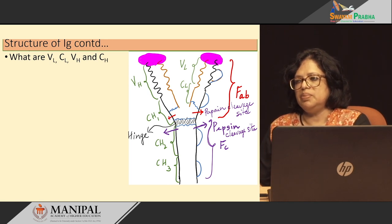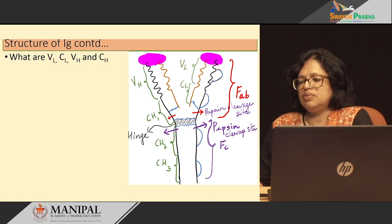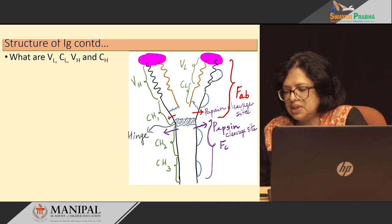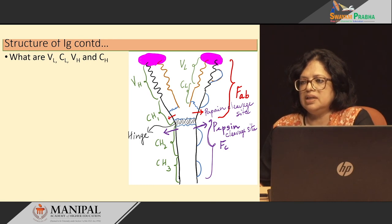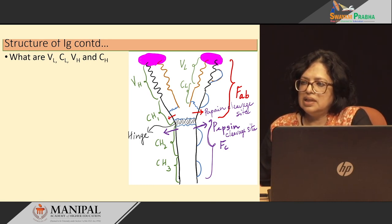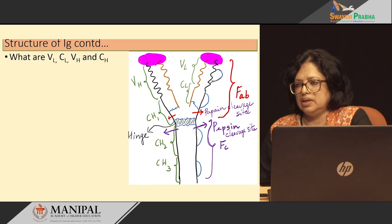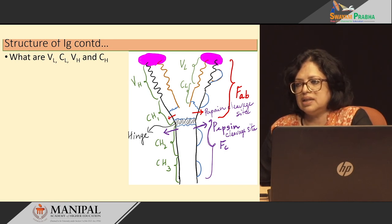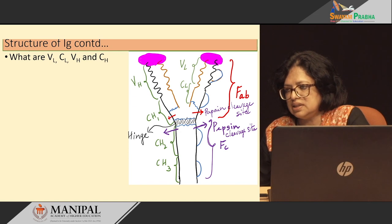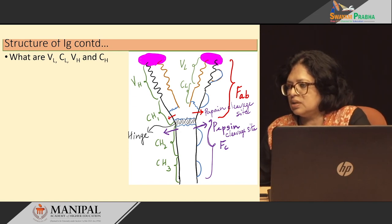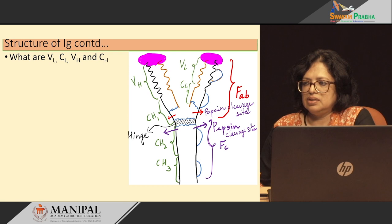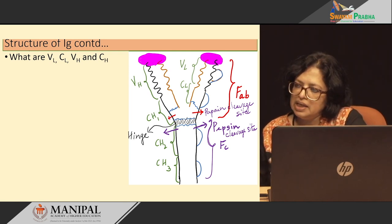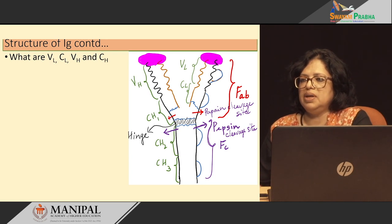If we use another enzyme called pepsin — pepsin as you know is a digestive enzyme found in gastric juice — pepsin will cleave the immunoglobulin below the hinge region, and we get only two pieces of the immunoglobulin molecule: one piece containing two FABs linked together, and another piece below the hinge region which contains only the CH2 and CH3 domains.